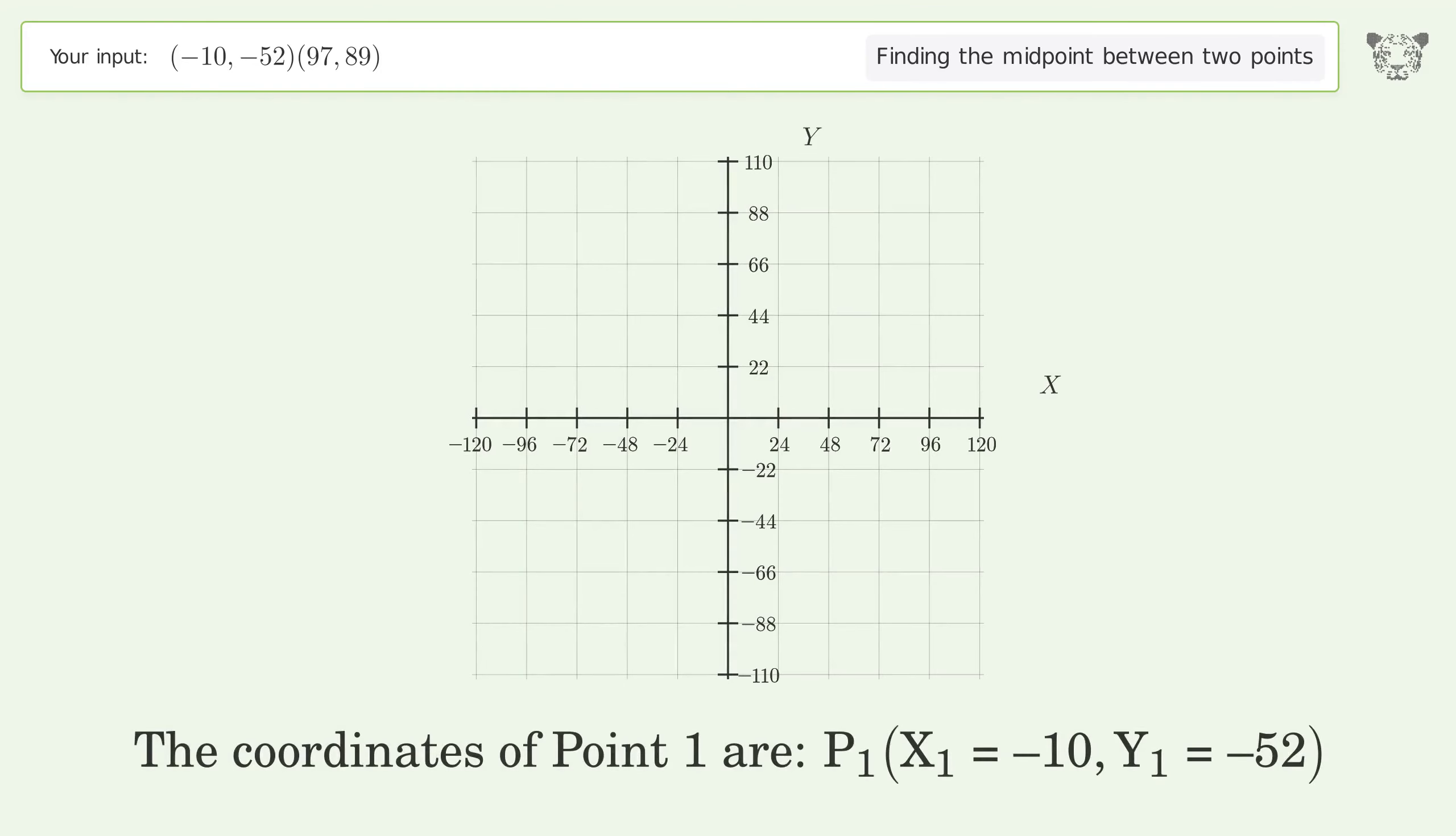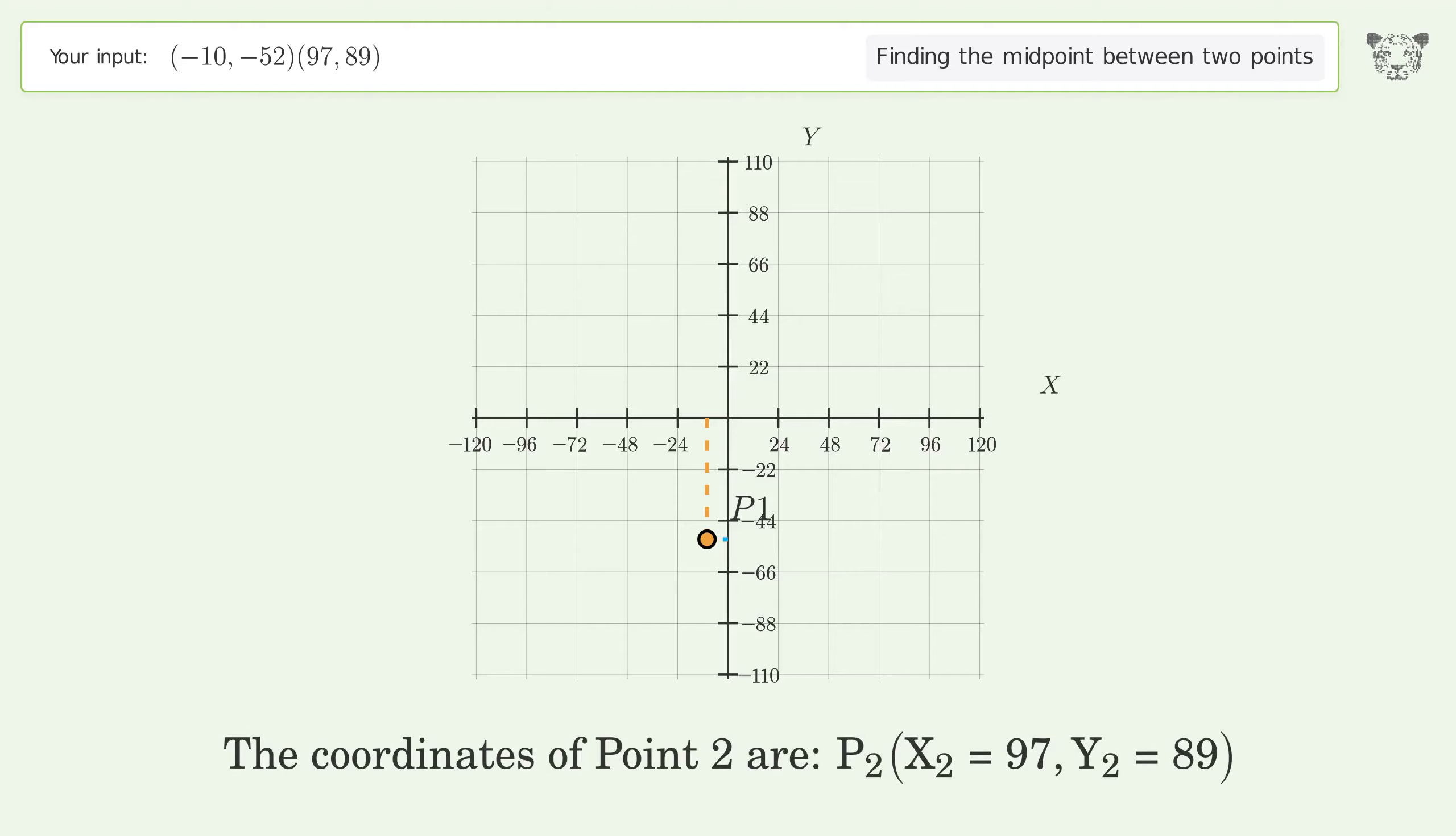The coordinates of Point 1 are: x1 = -10, y1 = -52. The coordinates of Point 2 are: x2 = 97, y2 = 89. Pm represents the midpoint of the two points.